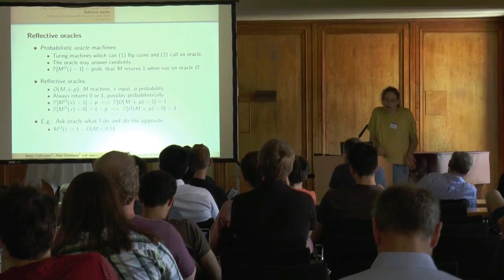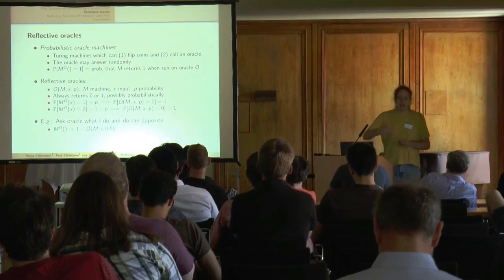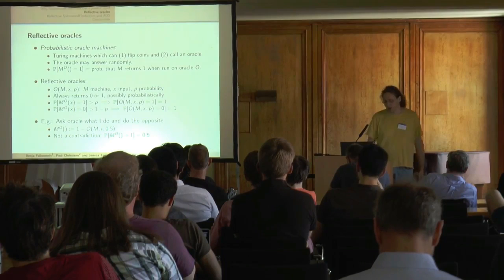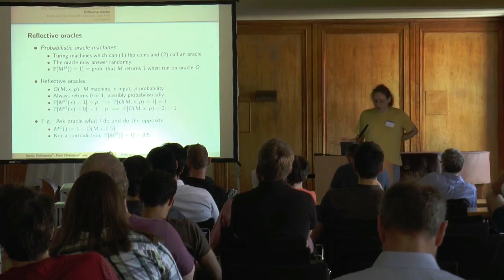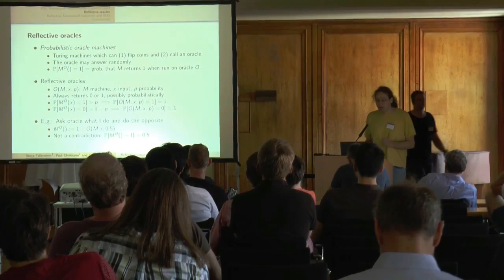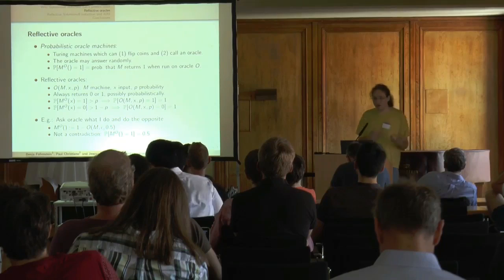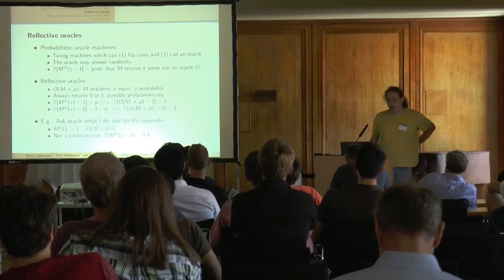Here's an example. Suppose I write a program that asks the Oracle 'what do I return?' and then does the opposite. We ask: is the probability that I return 1 greater than 0.5? If so, I return 0; otherwise I return 1. This is not a contradiction, because the probability can be exactly 0.5 — it's neither greater than 0.5 nor smaller than 0.5 — so the Oracle is allowed to return 0 or 1 with 50/50 probability, the program also returns 0 or 1 with 50/50 probability, and it all works out. We have a proof that reflective oracles do in fact exist.